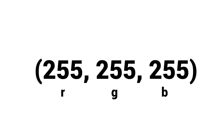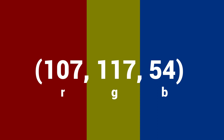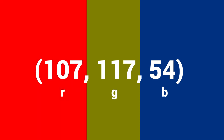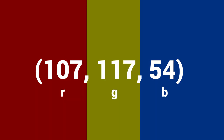RGB colors work like this: there's a maximum you can have for each channel, which is 255. All of them together at 255 make the color white. There's a minimum of zero, and all of them together at zero makes the color black. Or you can have a mixture of these values, each value telling you how much red, green, and blue there is in each pixel.